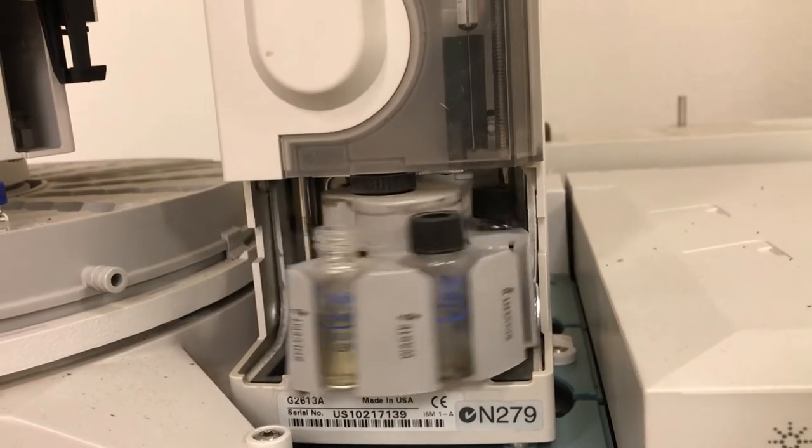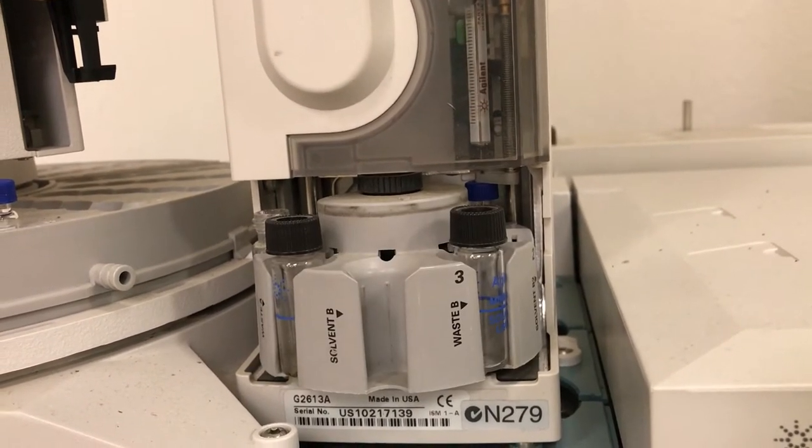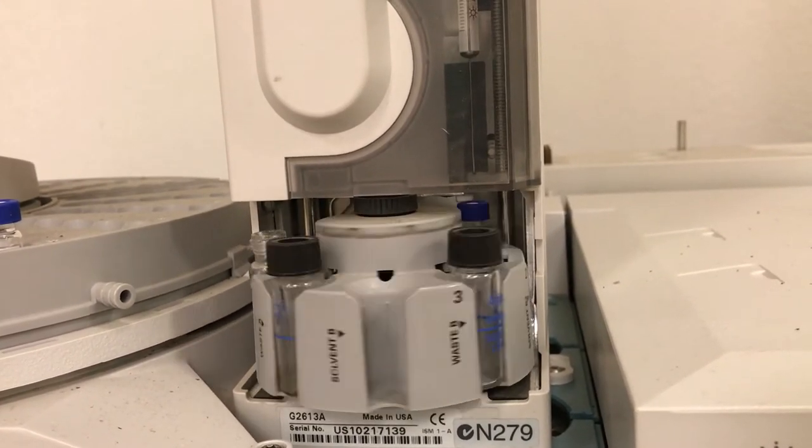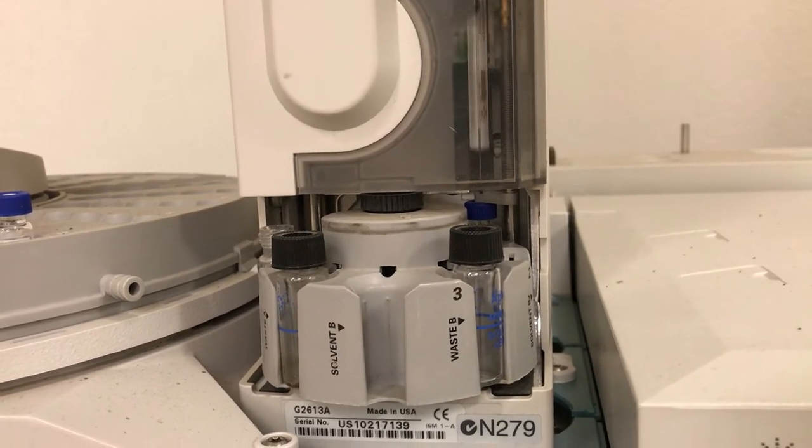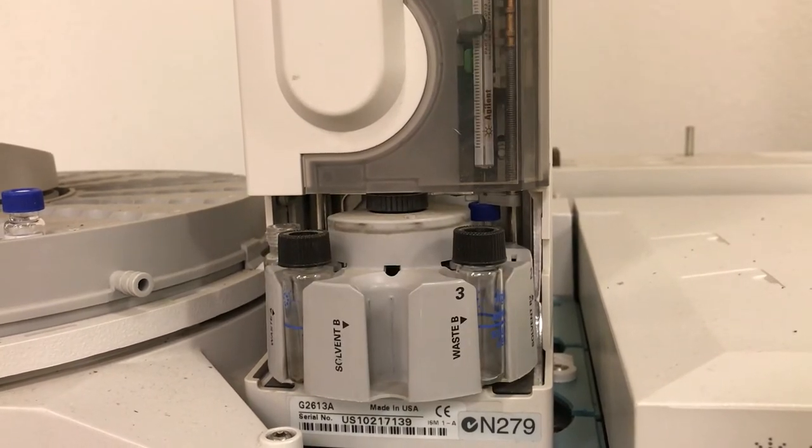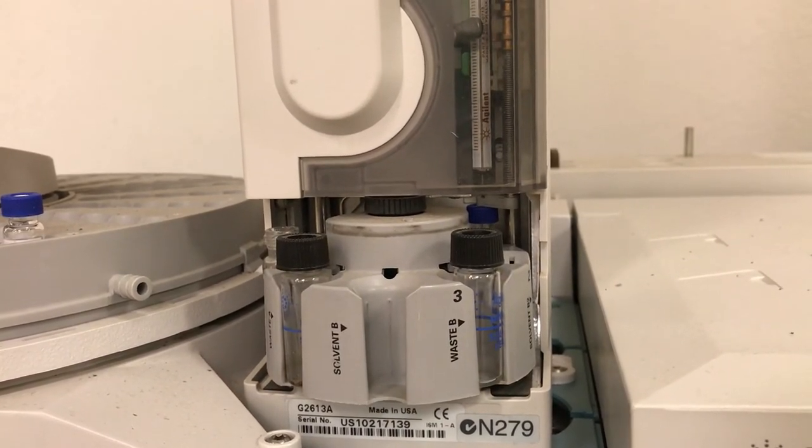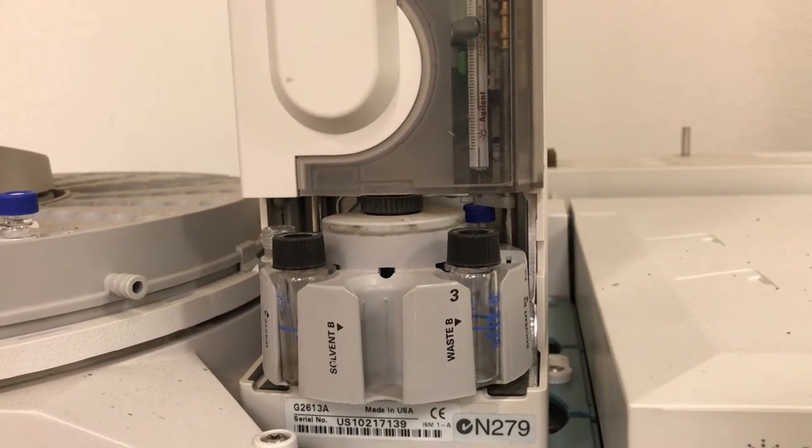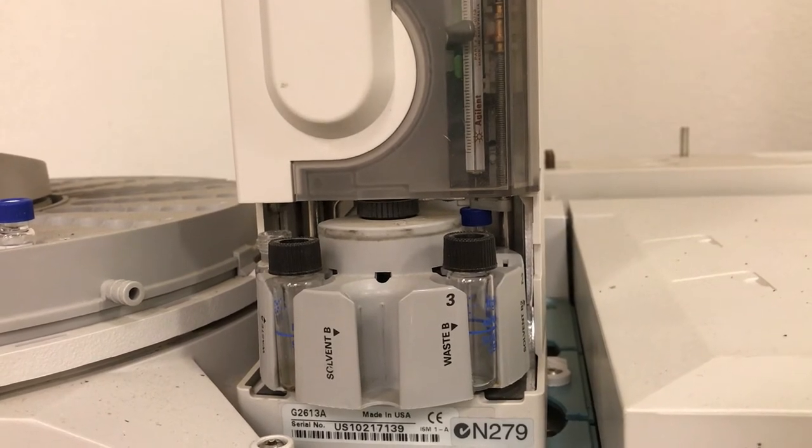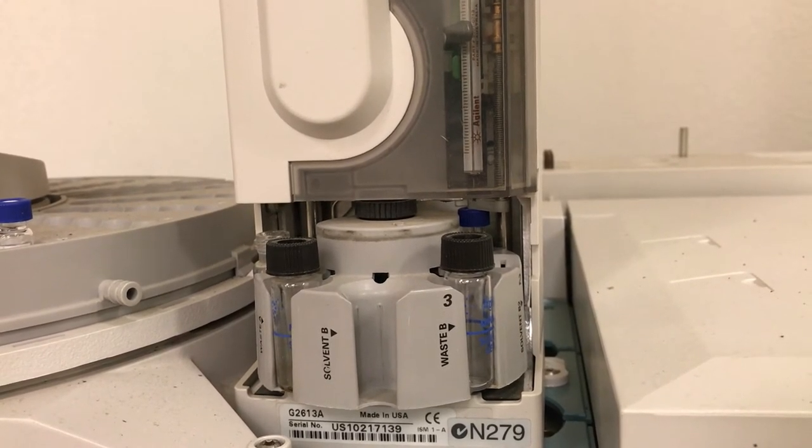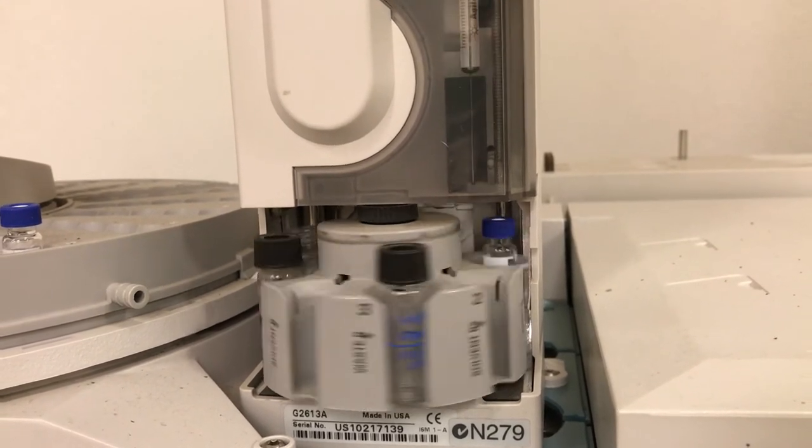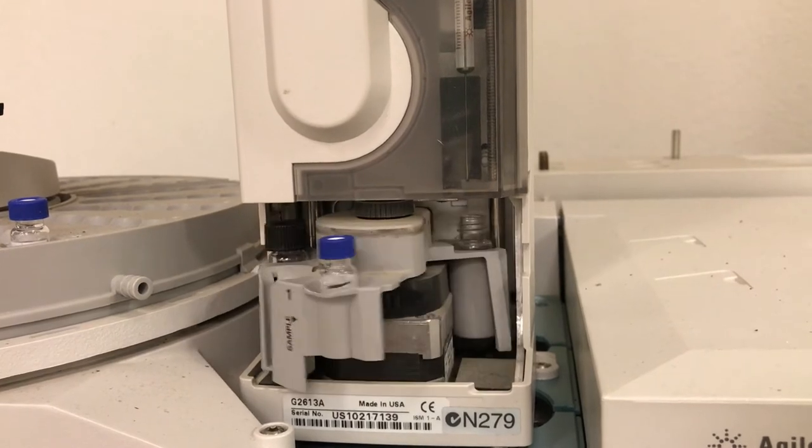So first what's going to happen is it's going to pull up some of my sample with that needle, you see it. It pulls up a little bit and then spills it out into a waste container and it does that twice to rinse the needle in case there was some leftover from the previous run. Then it shoots it out a couple of times trying to get rid of some air bubbles and then it's going to pull up just a little bit, about one microliter of sample. There it is, so that was just the injection.